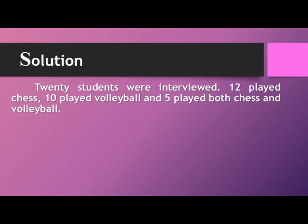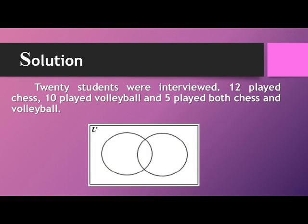To answer this problem, we will use the Venn diagram. The rectangle represents the universal set, and the two circles represent the two sets, which are students who played chess and students who played volleyball. Let us name the first set as C and the second as V. First, we will put the data found in the last statement — five played both chess and volleyball — so we will put five at the middle, where the circles overlap.